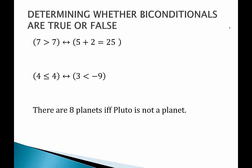Let's look at some examples. So pause the video, decide whether each of these biconditional statements are true or false. Starting with 7 is greater than 7. That is a false statement. And 5 plus 2 equals 25 is a false statement. So we have false if and only if false. The biconditional is true. This one is true. Right? They have the same truth value. So the biconditional is true.